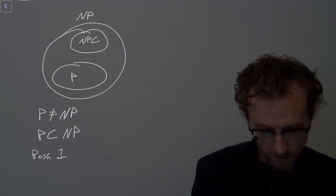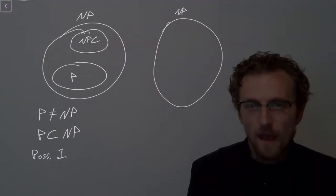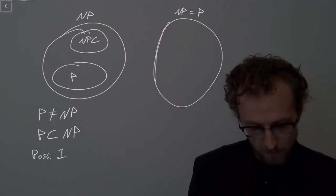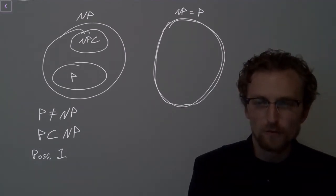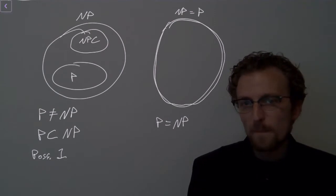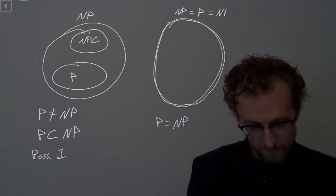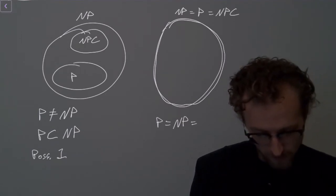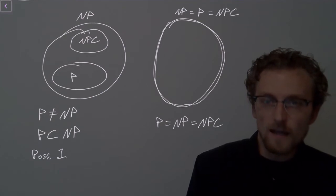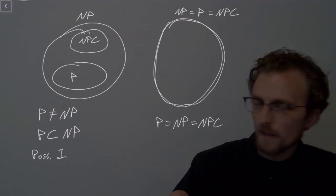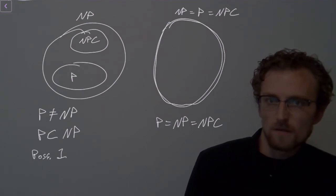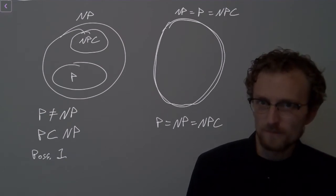The other way the universe could be arranged is like this: we have the set NP, and NP equals P. We've got the set NP overlaid exactly on top of P. What that would also imply is that every problem in P is NP-complete. So things like the array search problem that we looked at before would be, in some sense, as hard as the traveling salesperson problem.